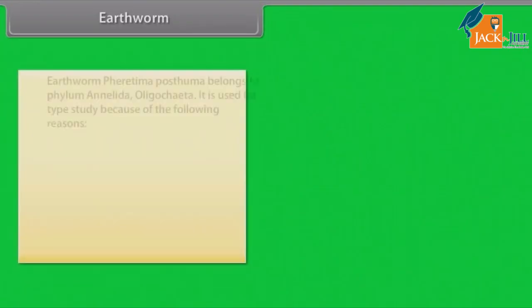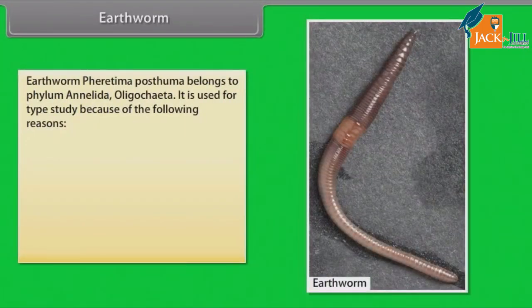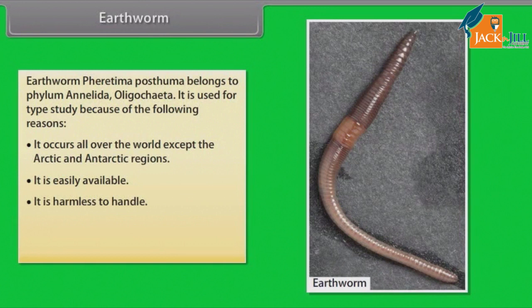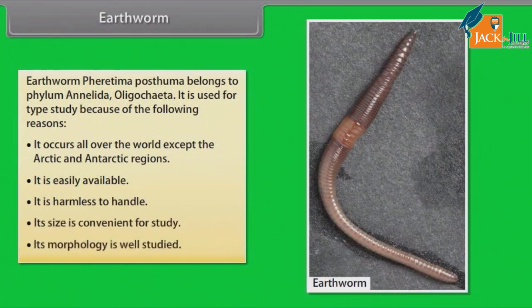Earthworm — Pheretima posthuma — belongs to phylum Annelida, class Oligochaeta. It is used for type study because it occurs all over the world except the arctic and antarctic regions. It is easily available, harmless to handle, its size is convenient for study, and its morphology is well studied.